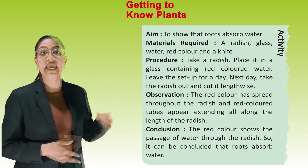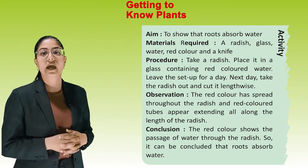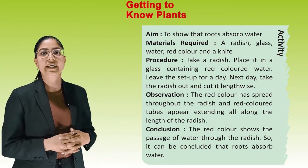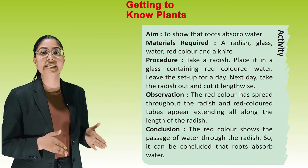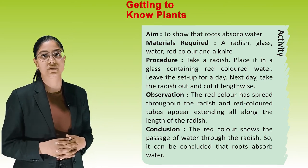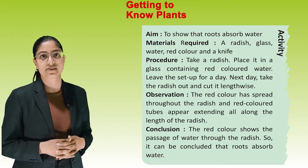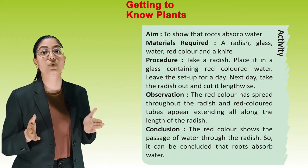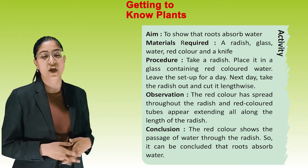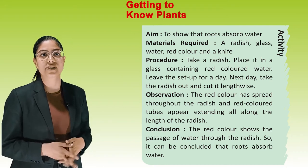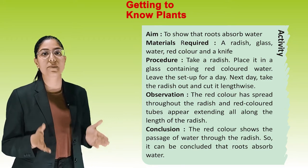Activity 2 — Aim: To show that roots absorb water. Materials: A radish, a glass, water, red color and a knife. Procedure: Place a radish in a glass containing red colored water. Leave the setup for a day. Next day, take the radish out and cut it lengthwise. Observation: The red color has spread throughout the radish and red colored tubes appear extended all along the length. Conclusion: The red color shows the passage of water through the radish, so roots absorb water.